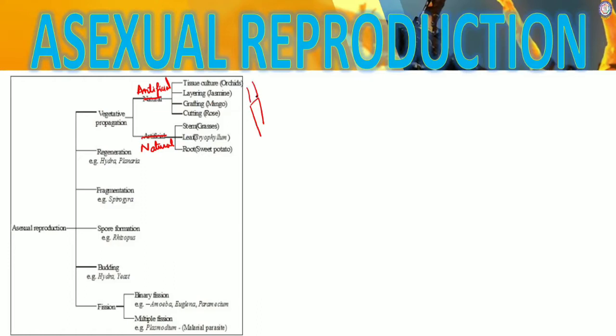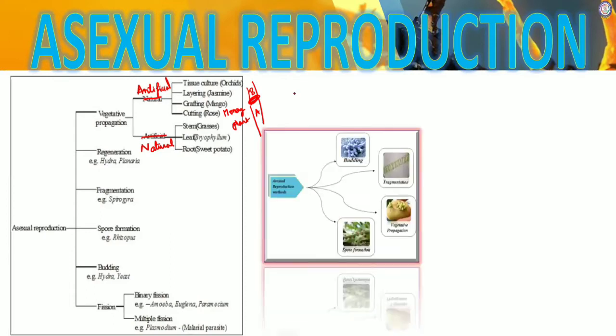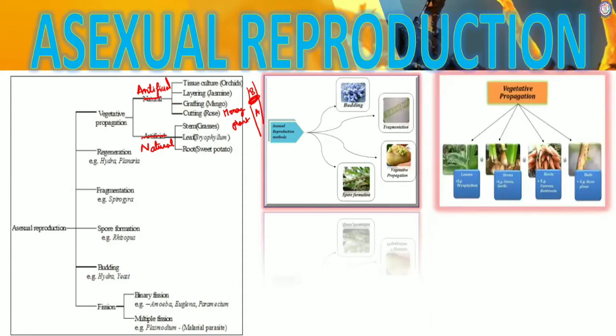In grafting, plant A provides the rooted part and plant B provides only the upper region without roots. Both are attached together and a new hybrid variety is obtained. Layering was discussed for rose plants. For cutting, another example is the money plant — in houses people cut the money plant into pieces, keep it in a bottle, and it develops. So these illustrate asexual reproduction through vegetative propagation.